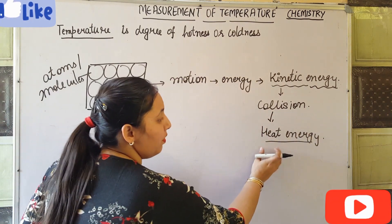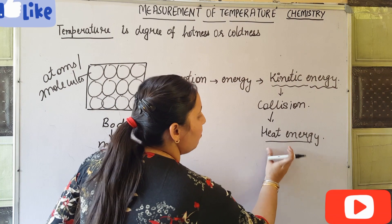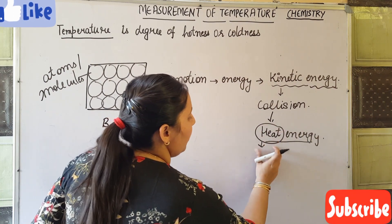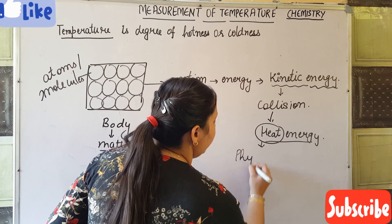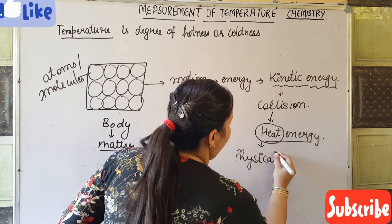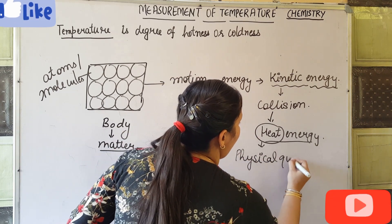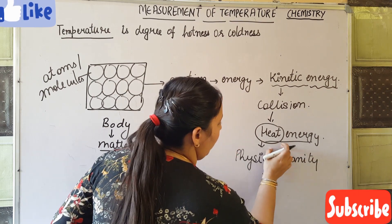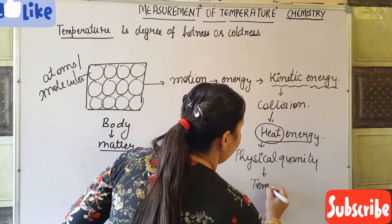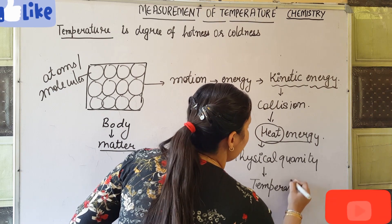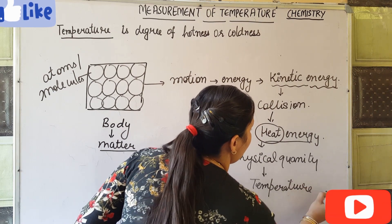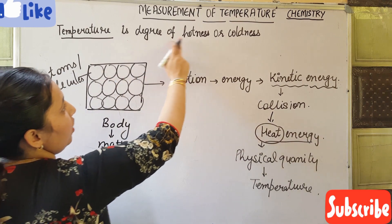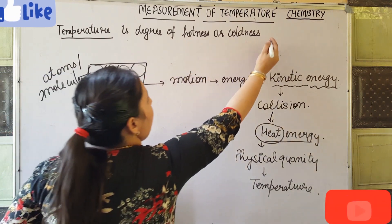What we have to do now is measure that heat. For the measurement of heat, we need some physical quantity. That physical quantity is temperature. So temperature is the degree of hotness or coldness of a body.